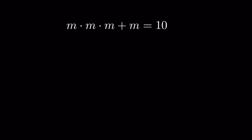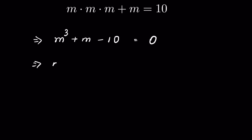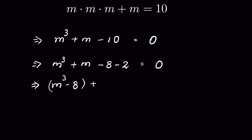m times m times m plus m equals 10. We have to find the value of m. We can write it as m³ plus m minus 10 equals 0, or m³ plus m minus 10, which we can split as minus 8 minus 2, equals 0. Now let's rearrange it: we can write m³ minus 8 together, then plus m minus 2 together, equals 0.